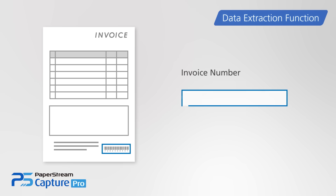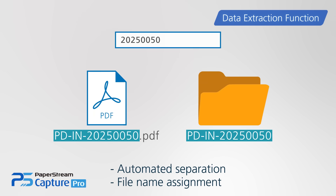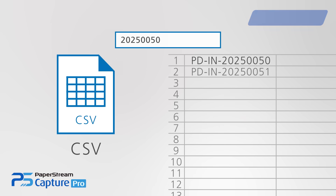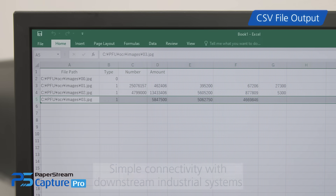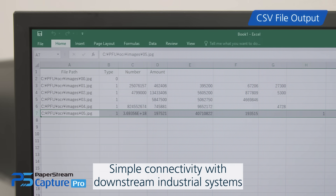Text data extracted by the data extraction function from forms that carry barcodes can be automatically assigned a file name. Extracted data can also be output as a CSV file, allowing for simple connectivity with downstream systems and streamlining the process from form completion to data input.